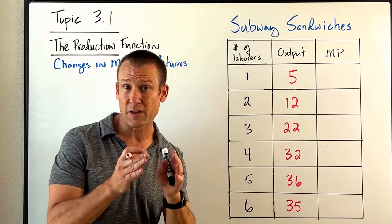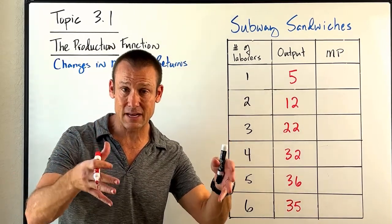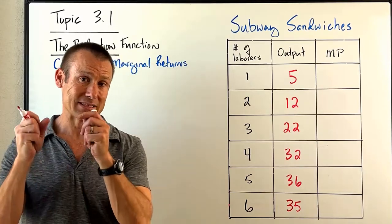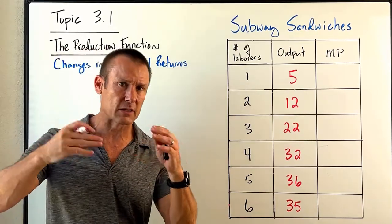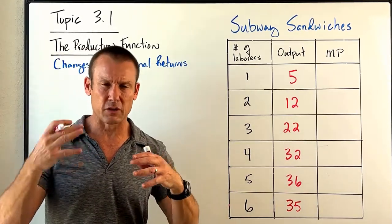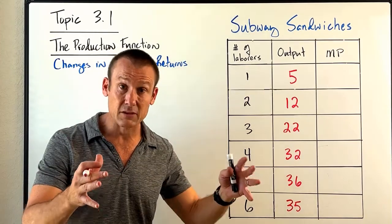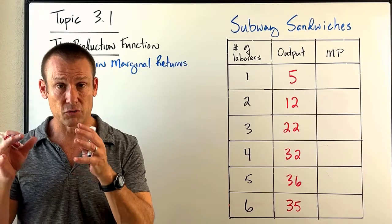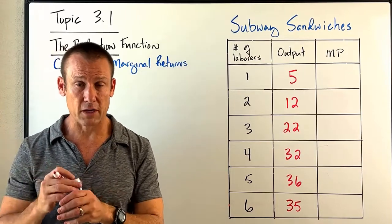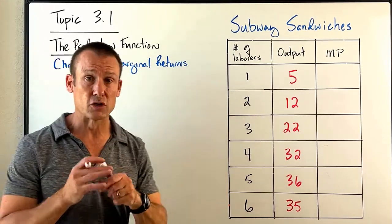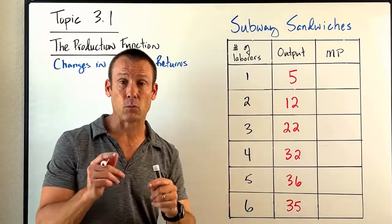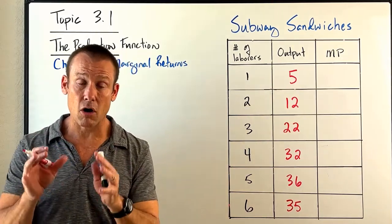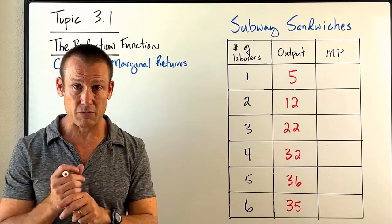Our number one go-to for fixed cost is the facility size. Our number one go-to for variable cost is laborers. So again, marginal returns is our change in output that we get by changing a variable input by one, keeping all other inputs constant.